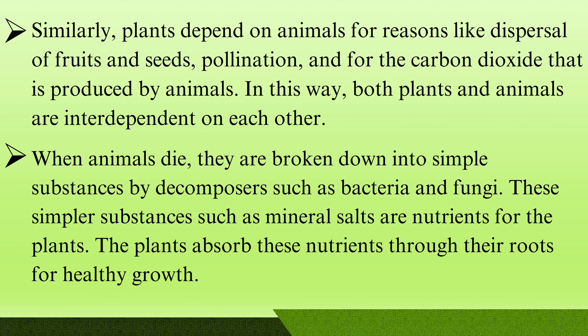Similarly, plants depend on animals for reasons like dispersal of fruits and seeds, pollination, and for the carbon dioxide that is produced by animals. In this way, both plants and animals are interdependent on each other. When animals die, they are broken down into simple substances by decomposers such as bacteria and fungi. These simpler substances, such as mineral salts, are nutrients for the plant. The plants absorb these nutrients through their roots for healthy growth.